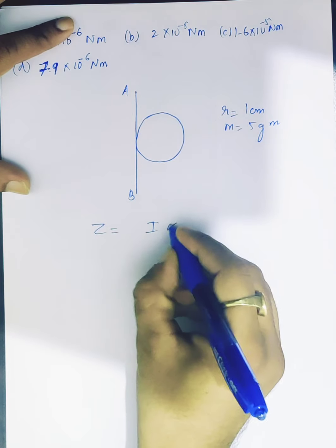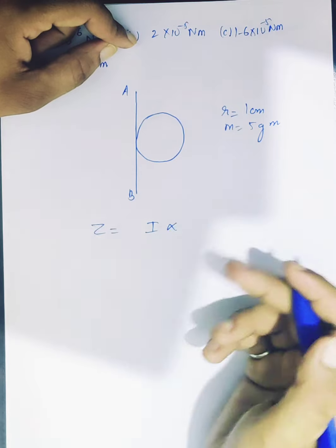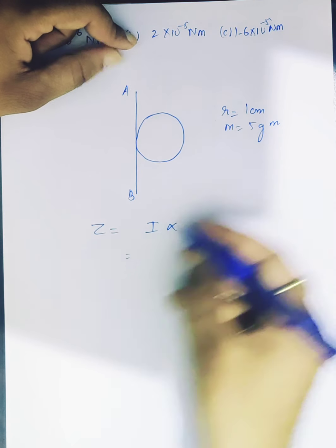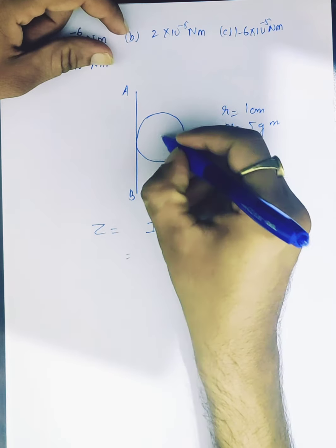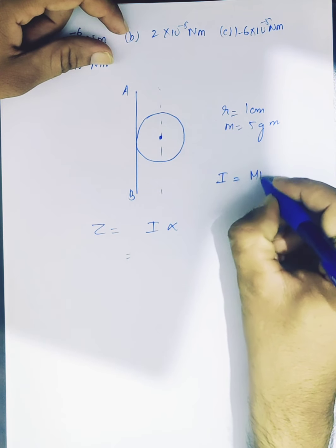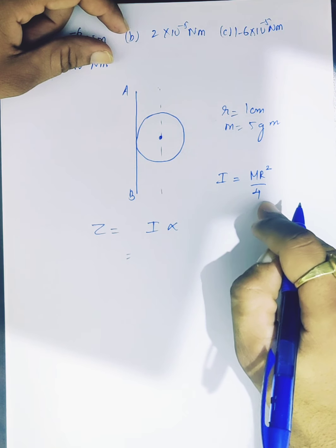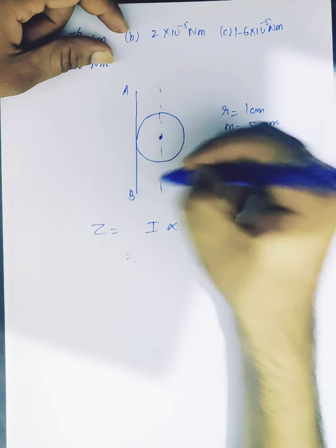So we need to find out torque which is I alpha. And in torque you will have to find I from the stick. Because this is like a disc about its diameter, MR square by 4. That is the moment of inertia about its center of mass and diameter.